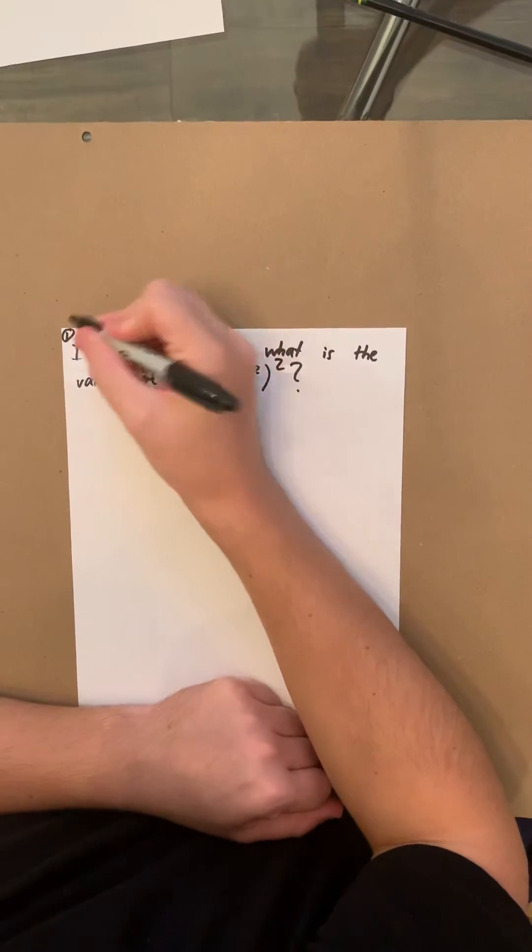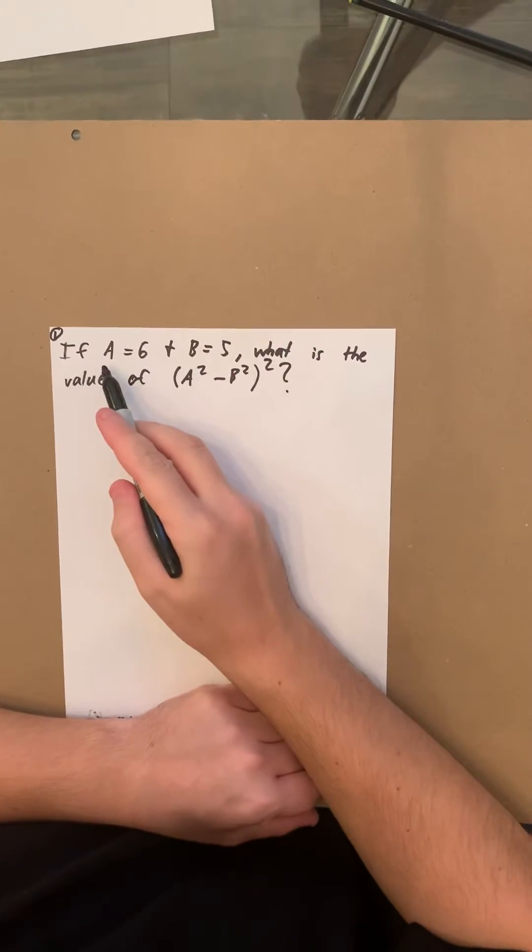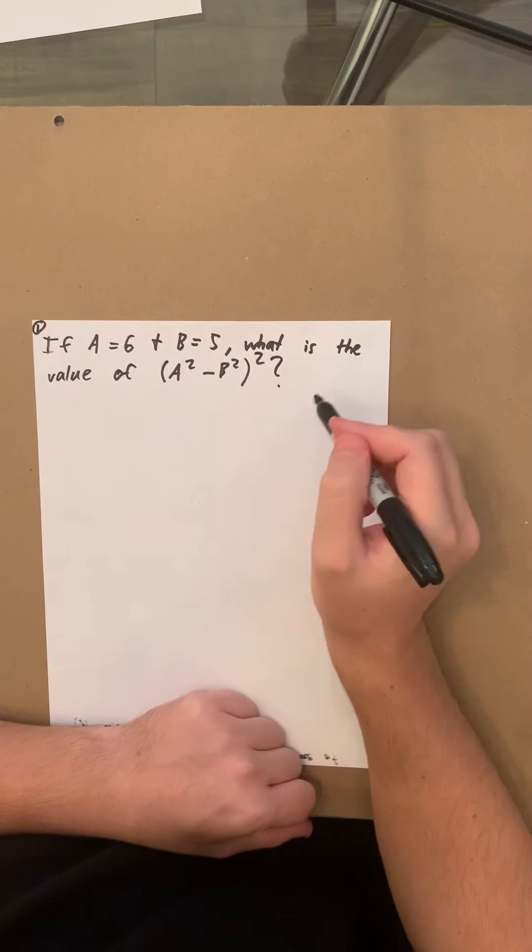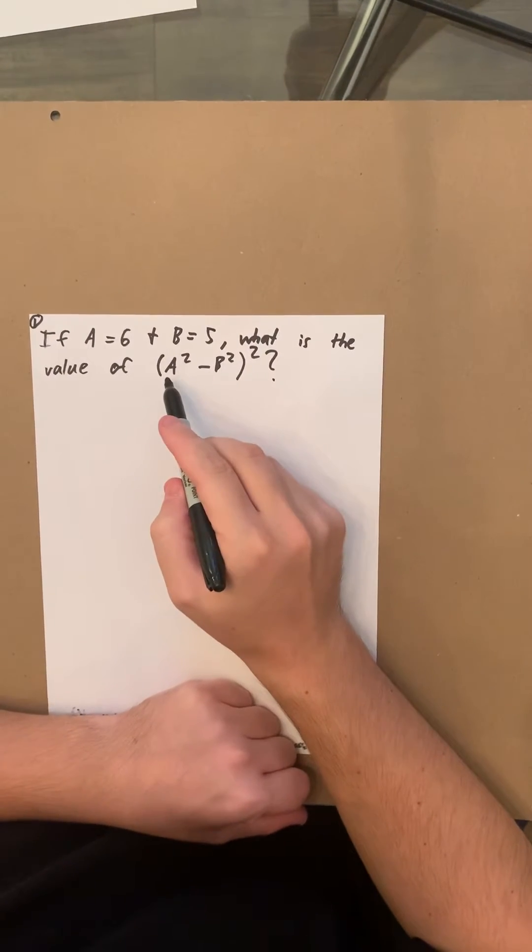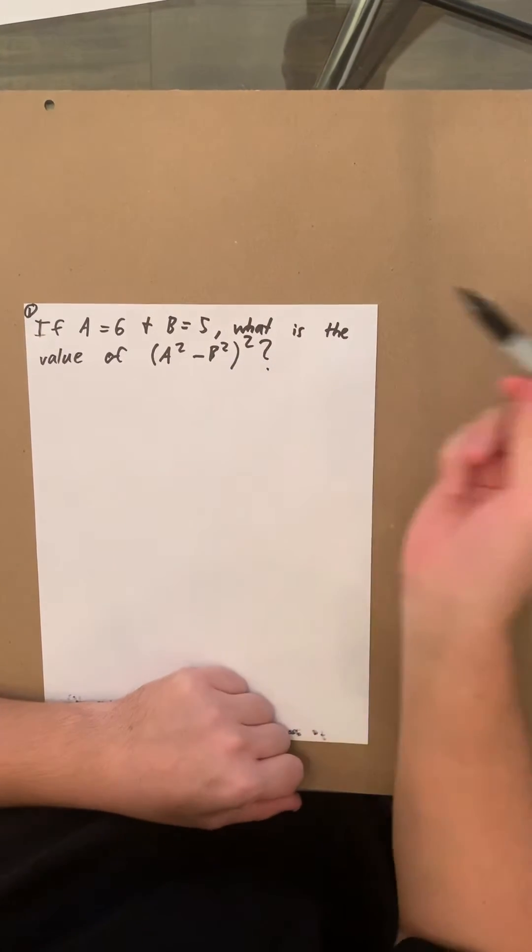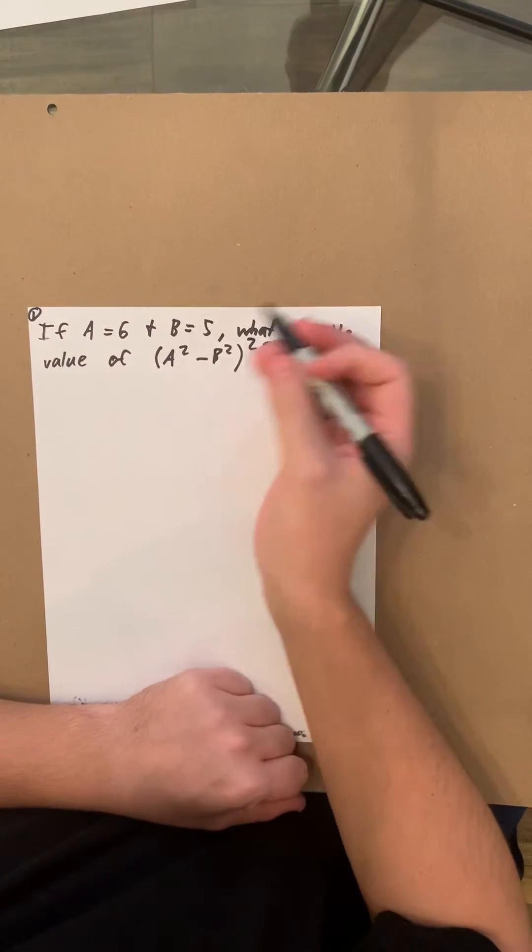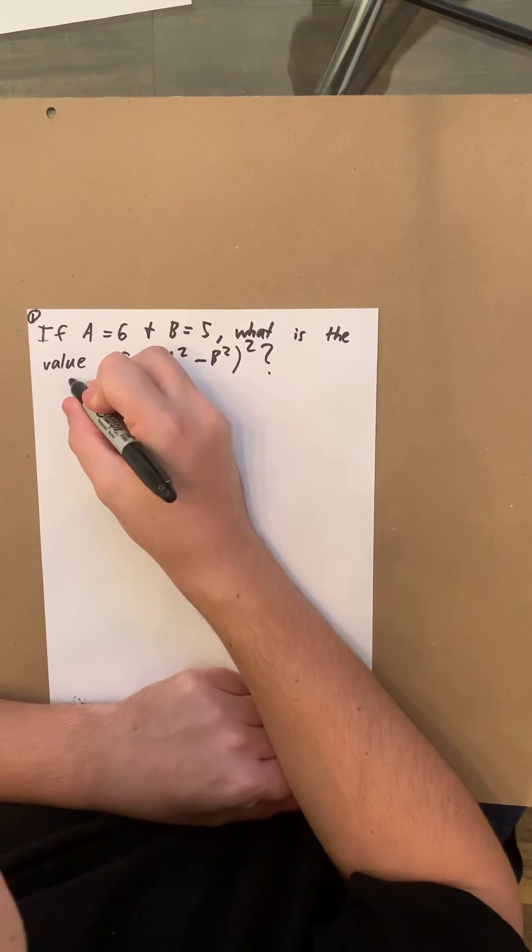Okay, so question one is, if A equals 6 and B equals 5, what is the value of A squared minus B squared squared? So first you're going to plug in the values that you know.